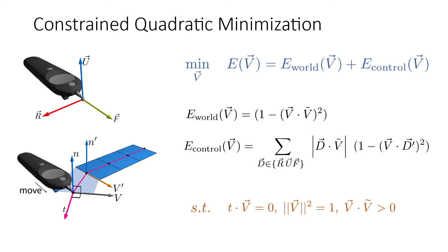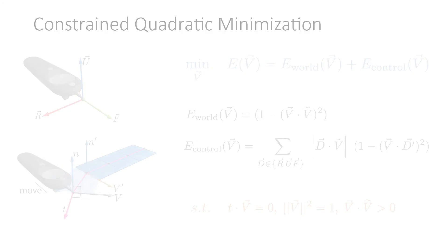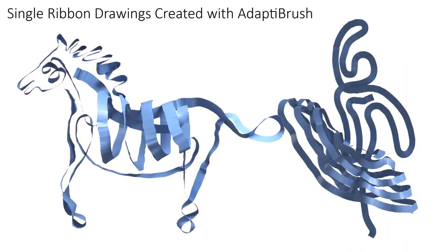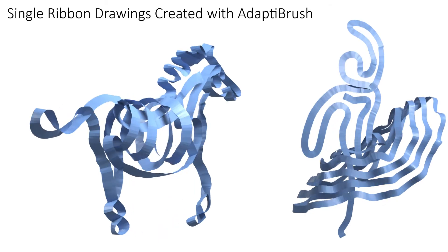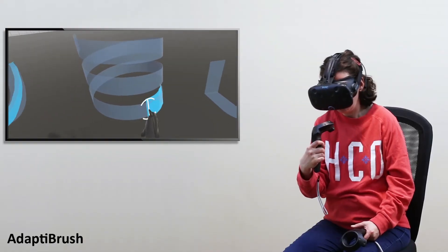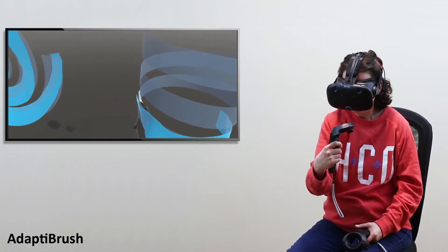We formulate the computation of the ruling directions that satisfy the criteria above as a constrained quadratic minimization problem and achieve real-time performance by efficiently solving for the desired minima with a trivially parallel solver. The resulting interface allows users to draw diverse, complex ribbons while only minimally changing the orientation of the controller, and thus their wrist orientation.